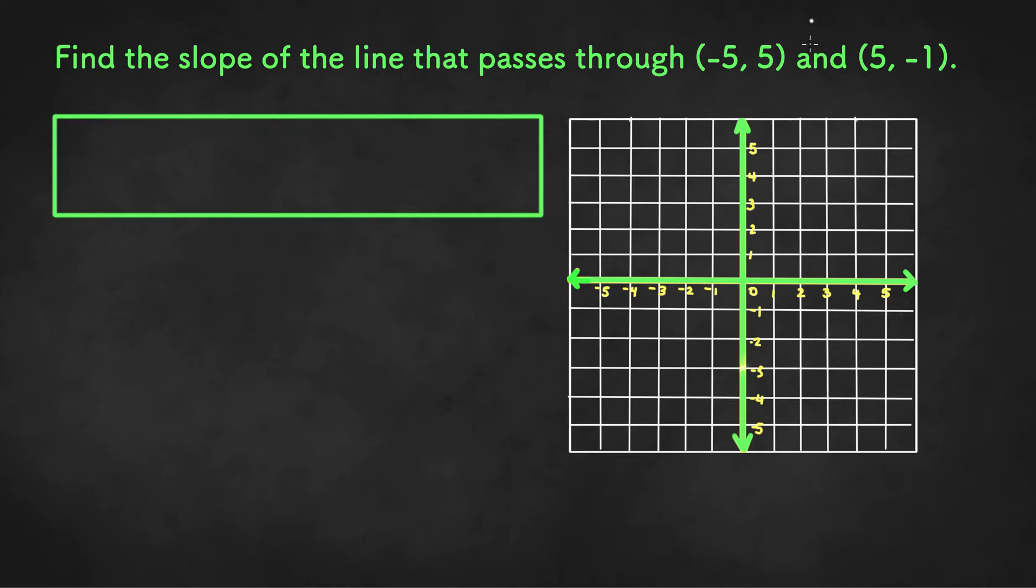So let's start off by graphing these points on the coordinate plane. So we have negative 5, 5 which is going to be right over here and we have 5, negative 1 which is right over here.